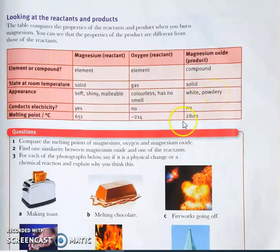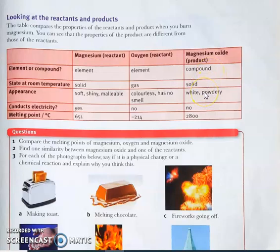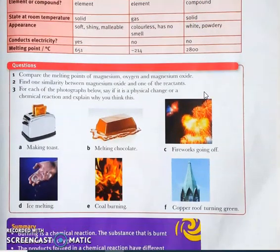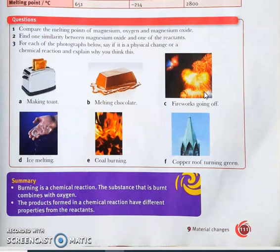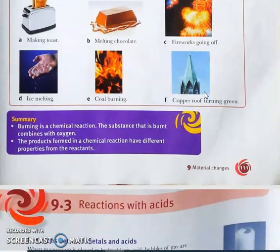Magnesium oxide is a solid, white, and powdery substance that does not conduct electricity. Its melting point is 2800°C — entirely different from its reactants. So the property of magnesium oxide is completely different from those of magnesium and oxygen, which is why it is a compound. Burning is defined as a chemical reaction where substances that are burned combine with oxygen, and the products formed have different properties from the reactants.